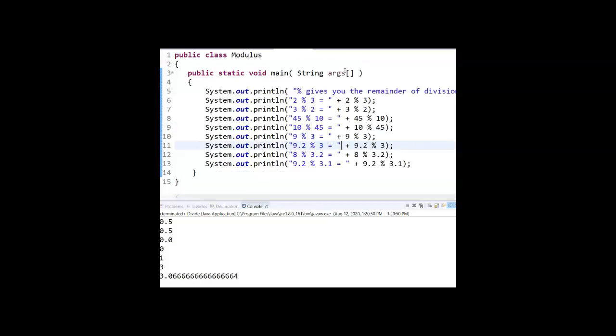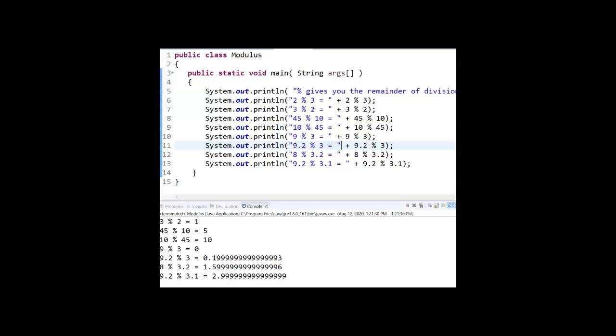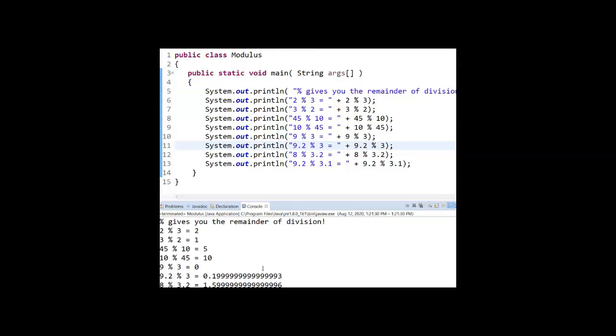The last math operator, the last process we want to look at is how do you get a remainder? How do you get the remainder from a division? So on the first example, I have 2 mod 3. 2 mod 3, how many times does 3 go into 2? 3 goes into 2 exactly 0 times. So when you look at that option, your remainder is going to be 2. So 3 goes into 2 0 times, you're left with the 2 that you started with.